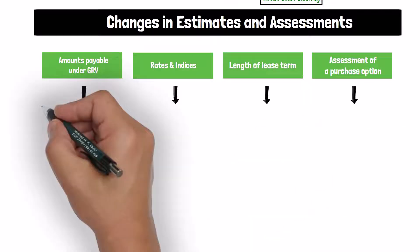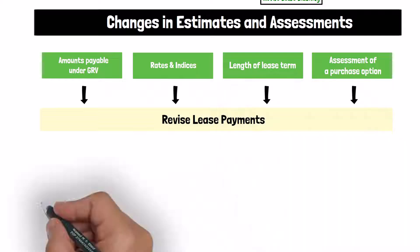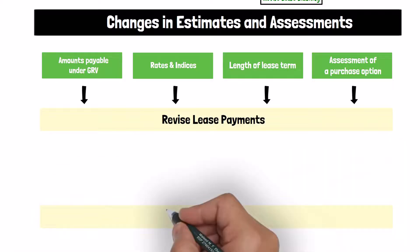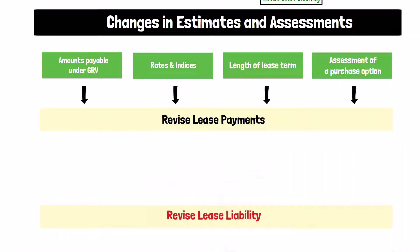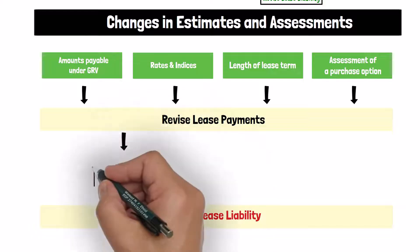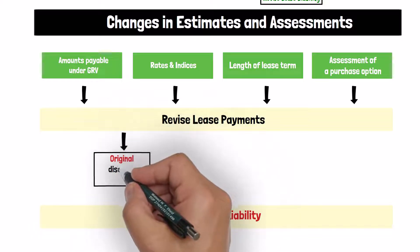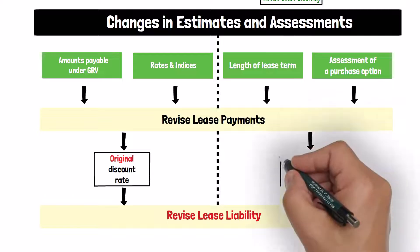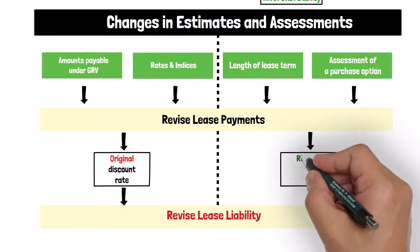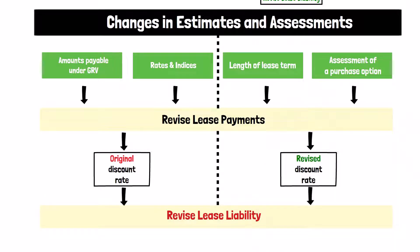In case a reassessment is required, we should revise the lease payments, then remeasure the lease liability as the present value of the revised payments. This remeasurement is done using either the original discount rate that was used on the commencement date, or a revised discount rate at the date of the reassessment.